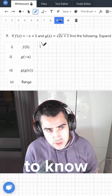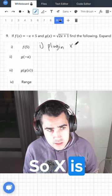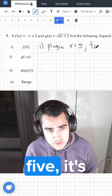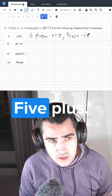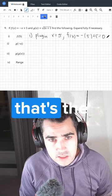For number one, what you need to know is how to plug in a value into the function. So x is equal to 5, and f of 5 is going to be minus 5 plus 5. We know that is 0, and that's the answer.